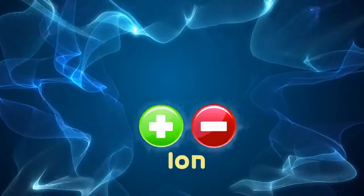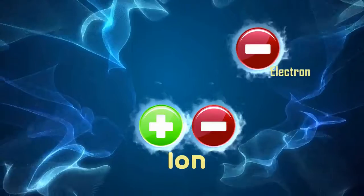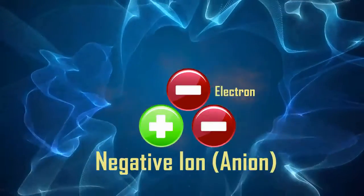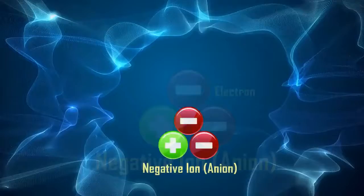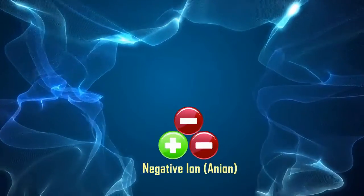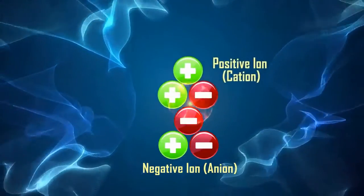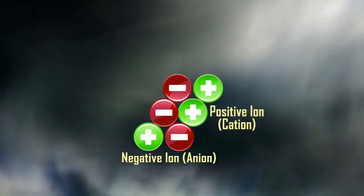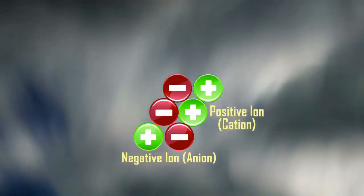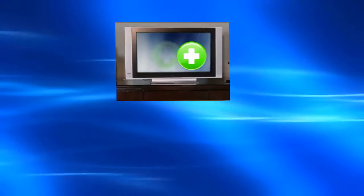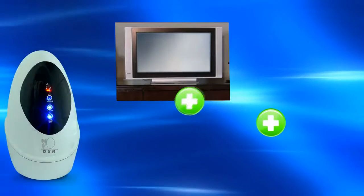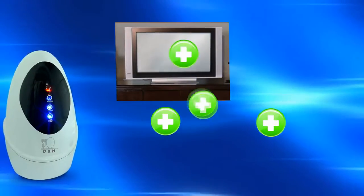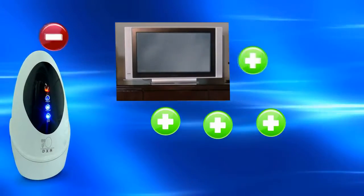Ions have a positive and negative charge. When an electron is added to ions, they become anions. Since anions have a negative charge, they are able to attract and neutralize harmful positive ions. Anions help purify the air by attracting harmful positively charged particles, making them heavy and causing them to fall. These positive ions are also found indoors, especially where a television or computer monitor is operating.